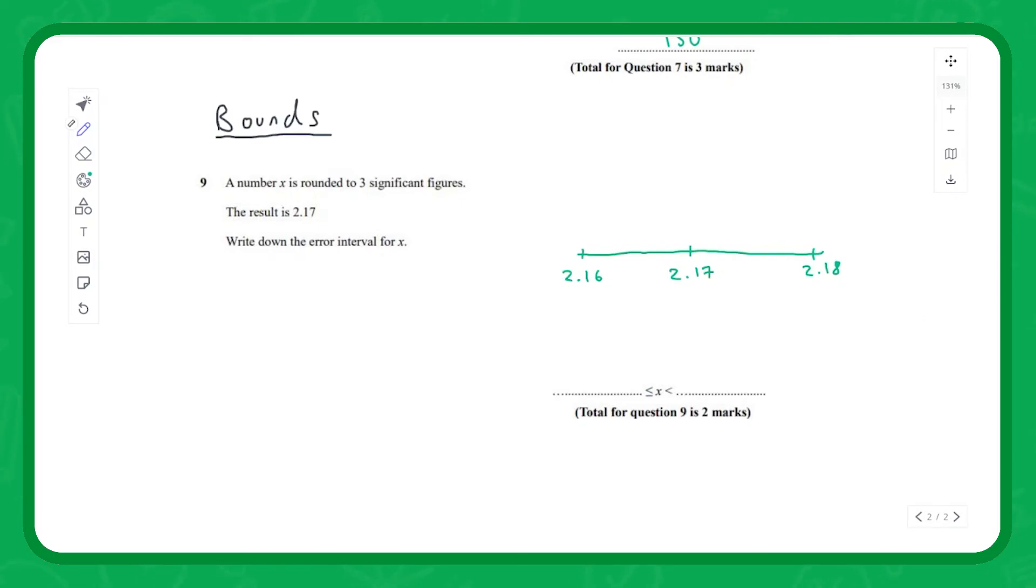If we then look at what the lowest that this could be is, well it's going to be directly halfway between 2.16 and 2.17. Anything to the right of this line will round up to 2.17, anything to the left we'd round down to 2.16. Likewise, directly between 0.17 and 0.18, well to the left we'd round down and to the right we'd round up. So we can see this is our full range of possible values that the true value could actually be.